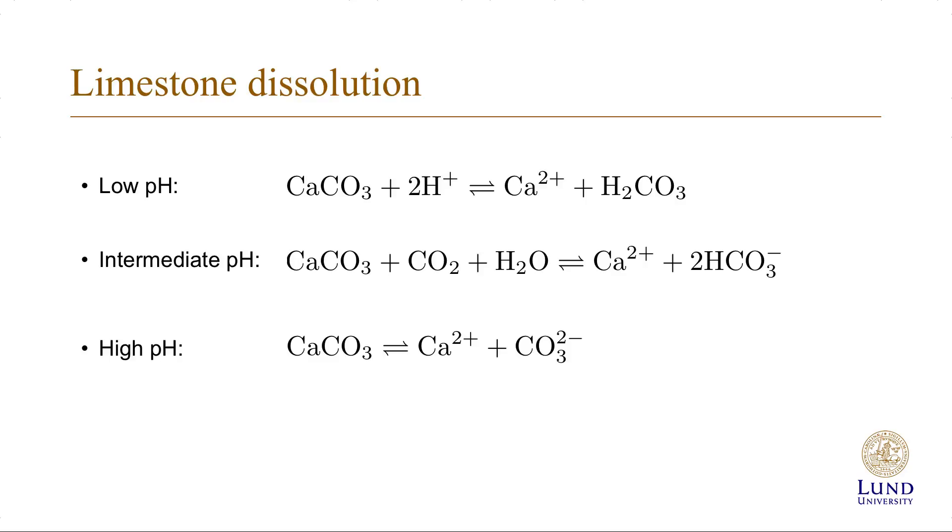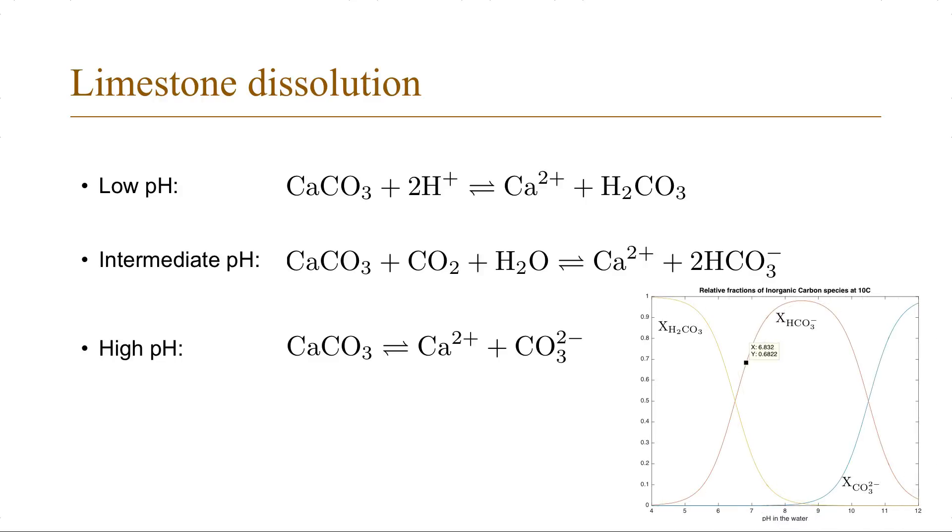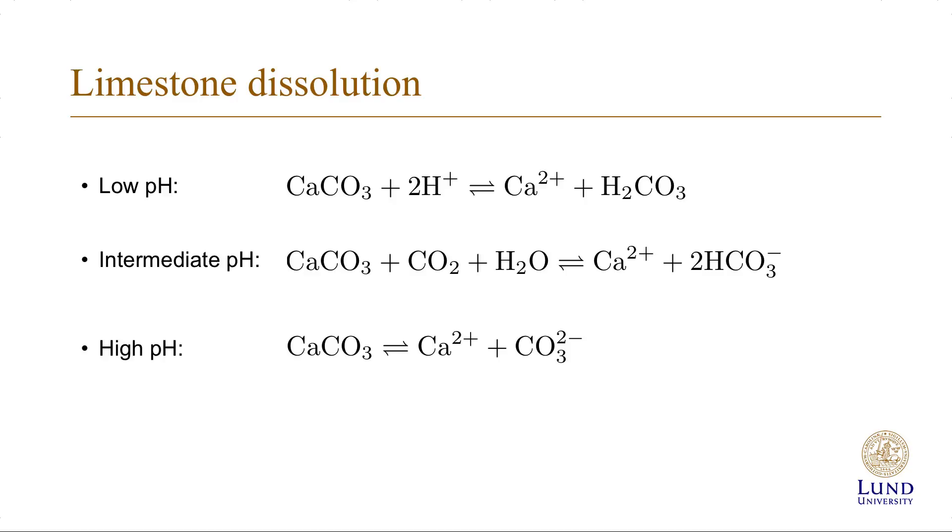This way of viewing the calcium carbonate dissolution is consistent with the previous discussion about which inorganic carbon compounds that dominate at different pH values. The equilibrium equation is written very simply as a solubility product, that is the product of the concentration of calcium ions and carbonate ions. And the dissolution equilibrium constant is about 10 to minus 8.4.